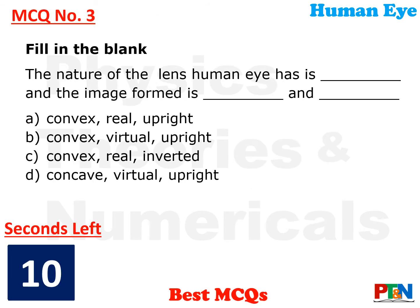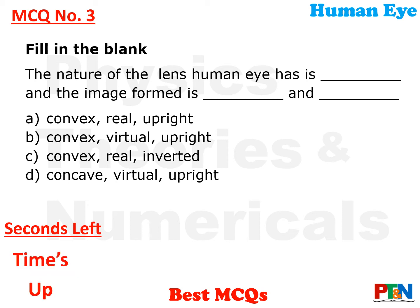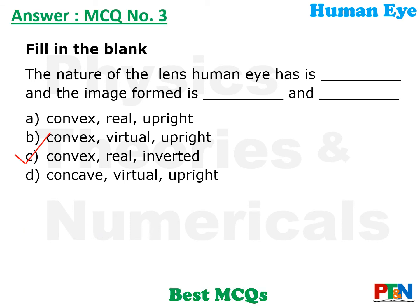Next MCQ. Fill in the blank: the nature of the lens the human eye has is what type of lens, and what type of image is formed? 4 options, 10 seconds time. The answer is option C. The nature of the lens in the human eye is a convex lens, and the image formed is a real and inverted image.